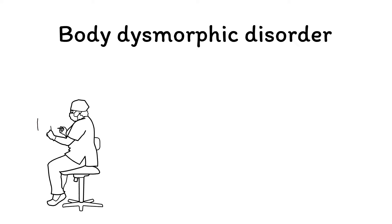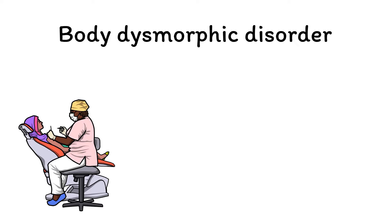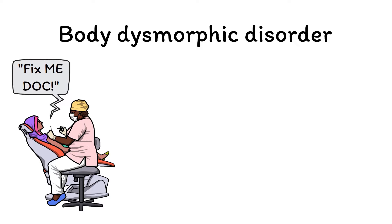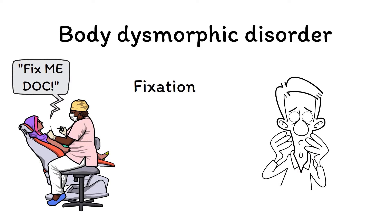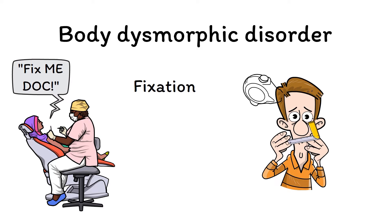Let's use a mnemonic to help guide us through the key features of body dysmorphic disorder. The phrase 'fix me doc' not only connects with the concept of the disorder, but also forms a handy acronym for its key features. First, the word 'fix' will remind us that the starting place for body dysmorphic disorder is a mental fixation that specific aspects of one's appearance are flawed or deformed, such as a nose that is too big or a head that is too small.